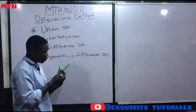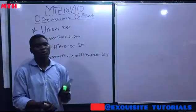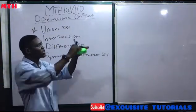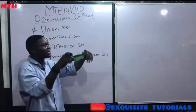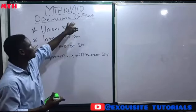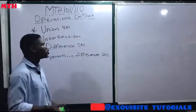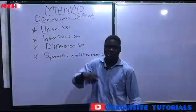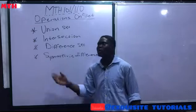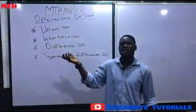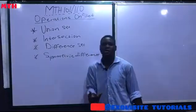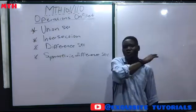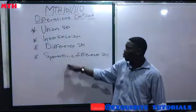Before I talk on these, let me touch on Venn diagrams. A Venn diagram comprises circles inside a square or rectangle. It is used to denote sets — the universal set and the subsets. That square or rectangle is what we call the universal set, while the subsets are the circles. Anytime you see circles inside a square, that's a Venn diagram. I'll be explaining these four operations using the Venn diagram.